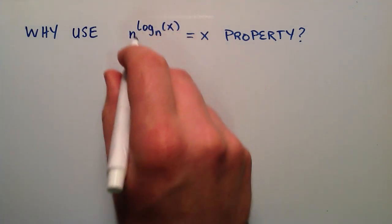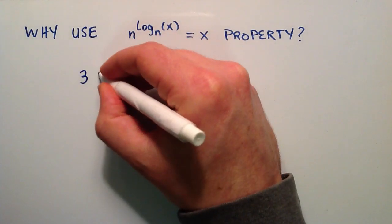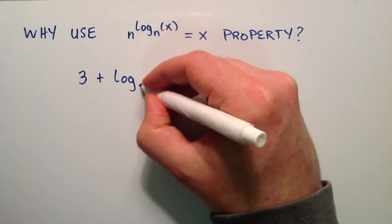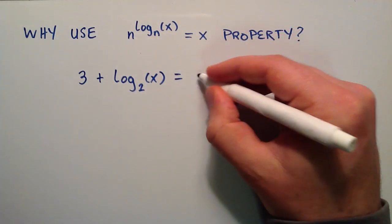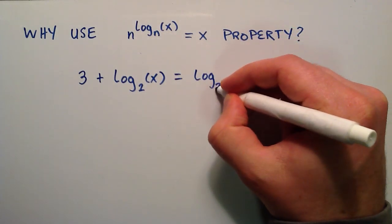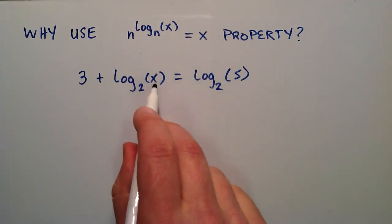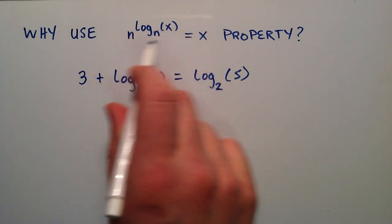So this property right here is useful when we're dealing with a problem kind of like this. What if we had 3 + log base 2 of x, and if that equals something like the log base 2 of 5. So if we wanted to figure out what x was to make this statement true, we can use this property right here.